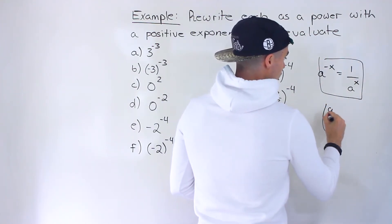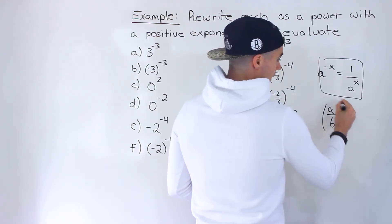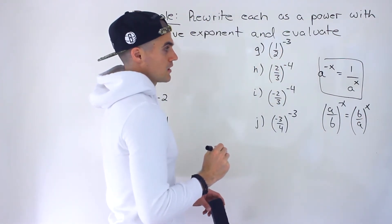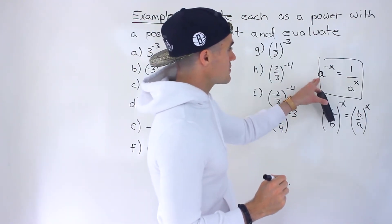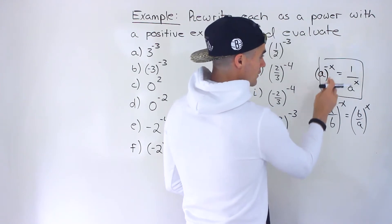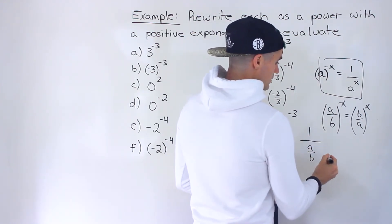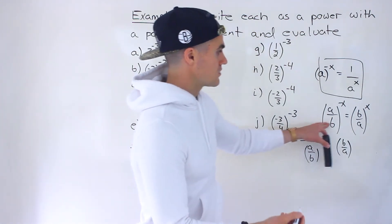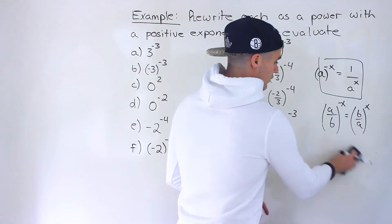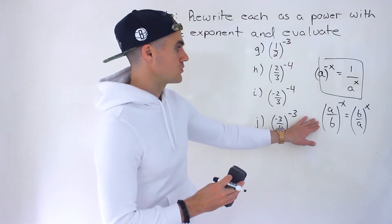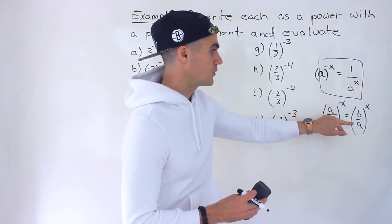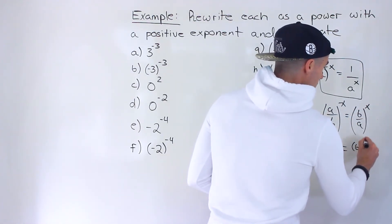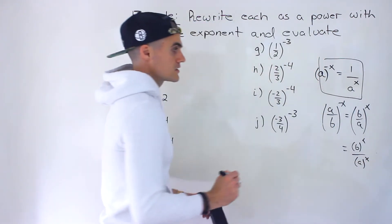The other rule is if we have a fraction to a negative exponent, what we can do is flip the fraction, and that changes the exponent to a positive. This is actually the same rule — taking 1 over any fraction gives you the reciprocal of that fraction. So with a fraction to a negative exponent, flip the fraction, change the exponent to positive, then take the numerator to that exponent and the denominator to that exponent as well.